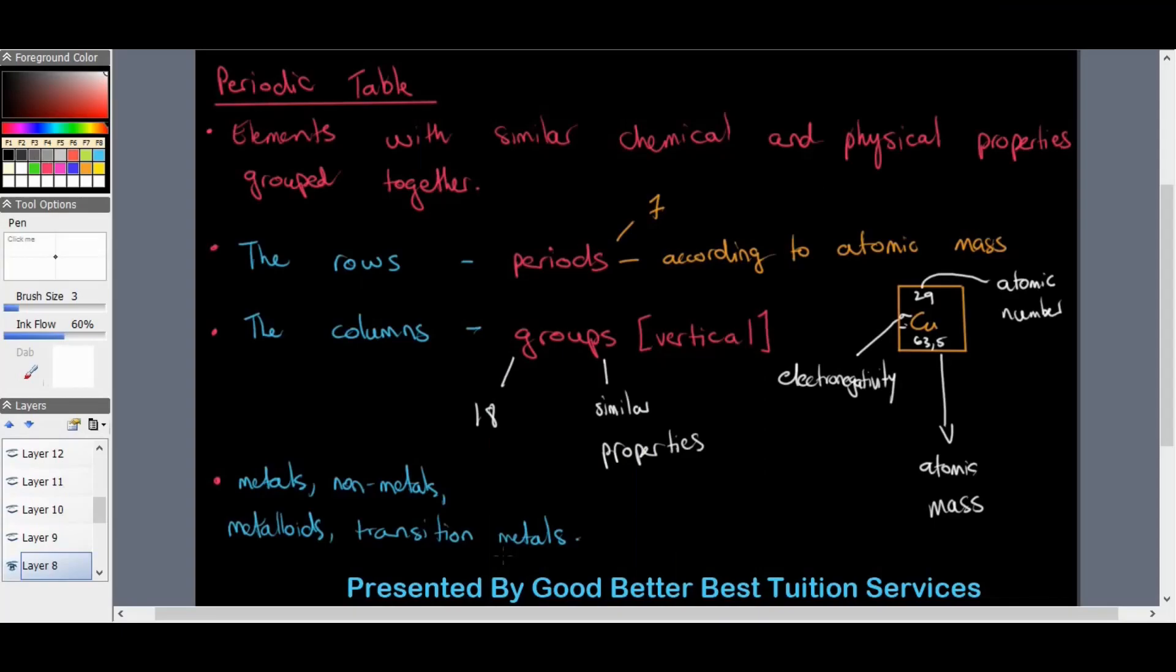Welcome Grade 10 physical science learners. We're in our second tutorial video today and we are going to be starting off by looking at the periodic table in more detail. I know there was a research task from the previous week on finding out five metals, nonmetals, and metalloids.